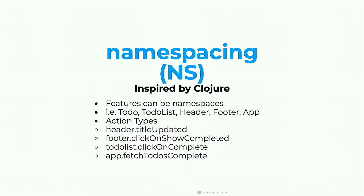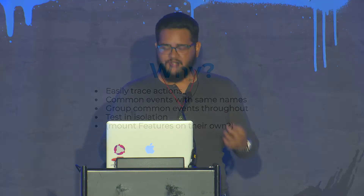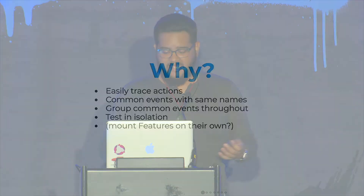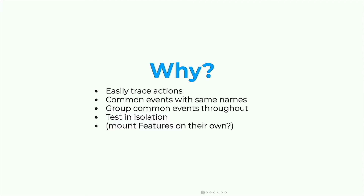Here are more examples: header.titleUpdate, footer.clickOnShowCompleted, todoList.clickOnComplete. Some of these are actual examples from FreeCodeCamp. These make it really easy to trace where your actions are coming from in your app, and let you use common event names — like fetch something — without having to worry about name collisions when it comes to action types.